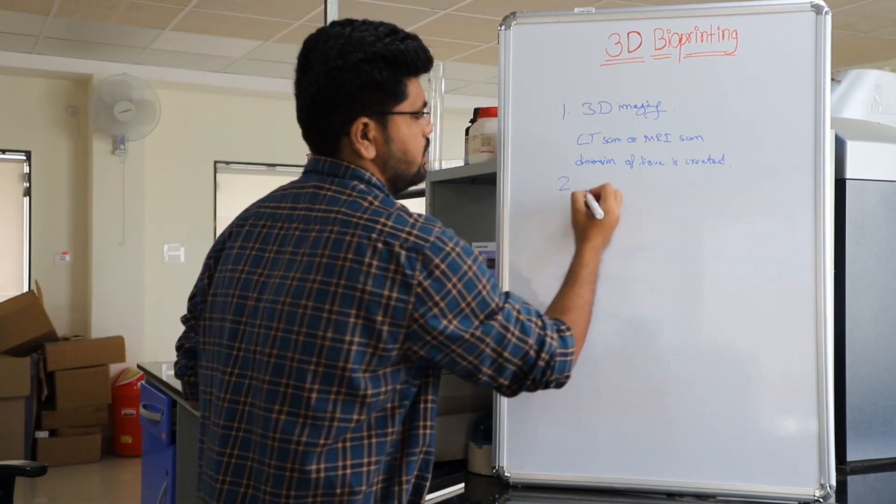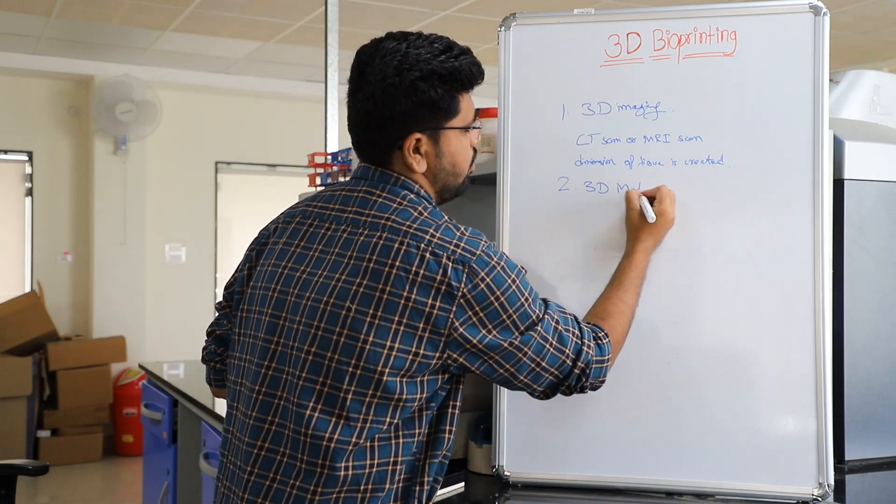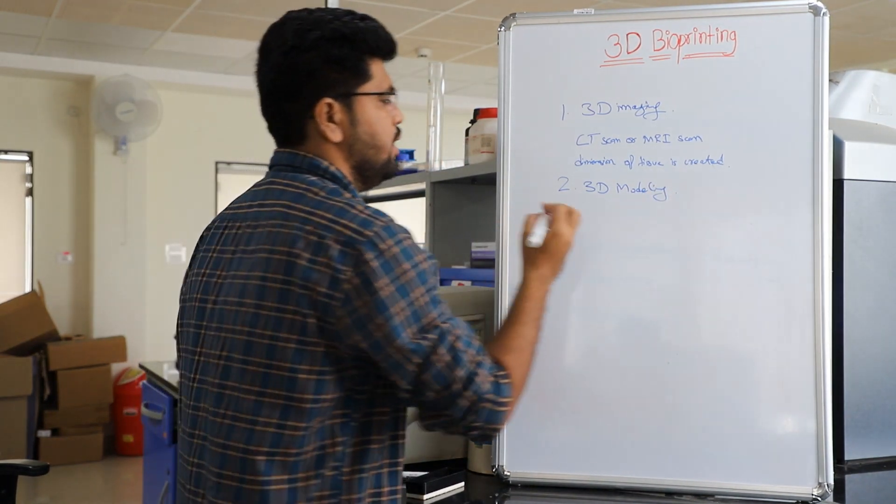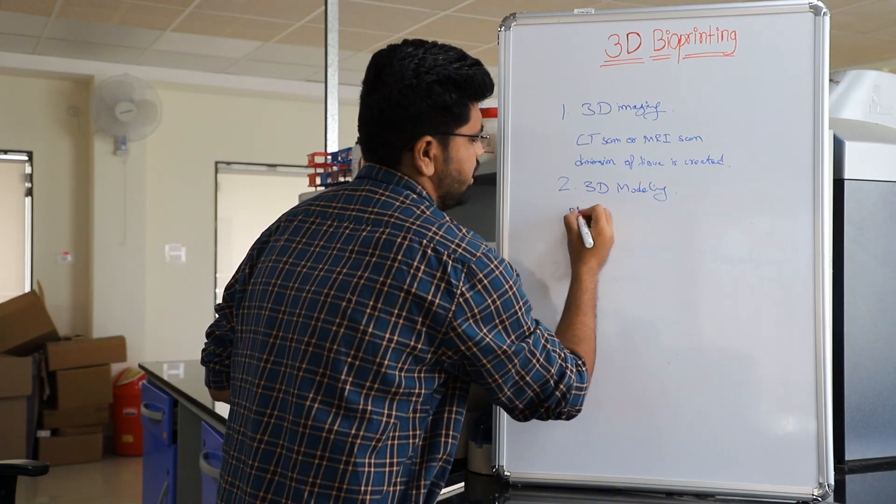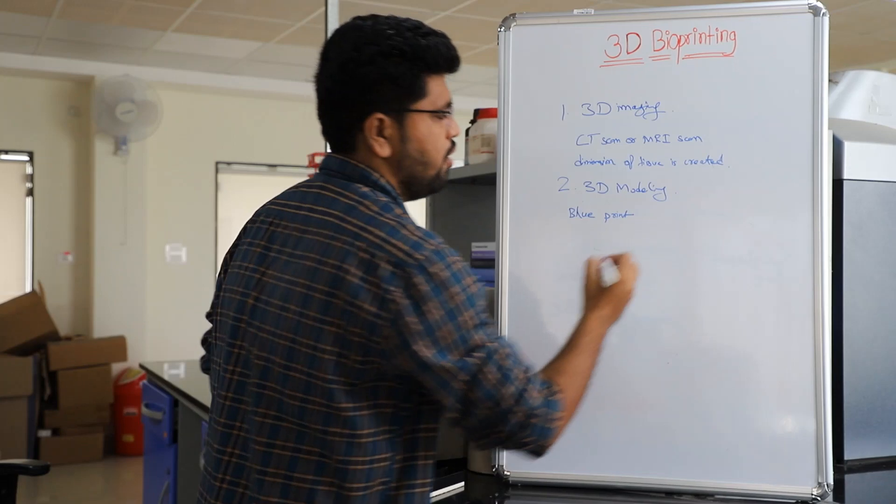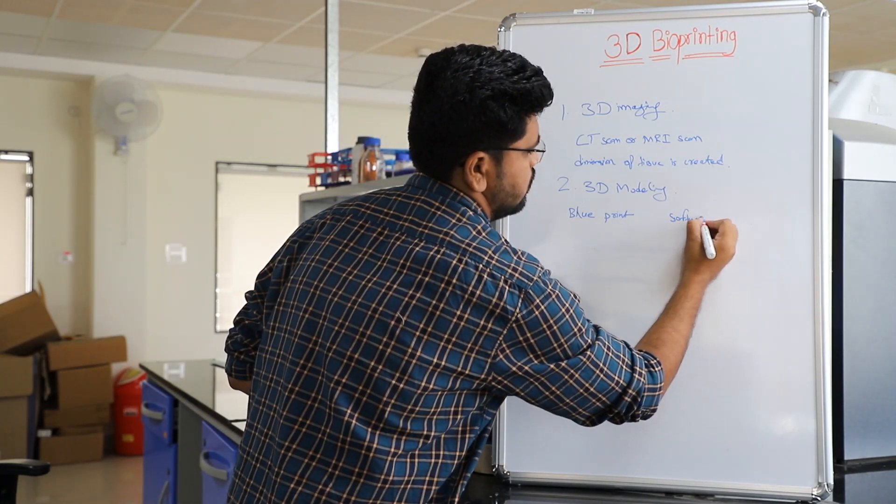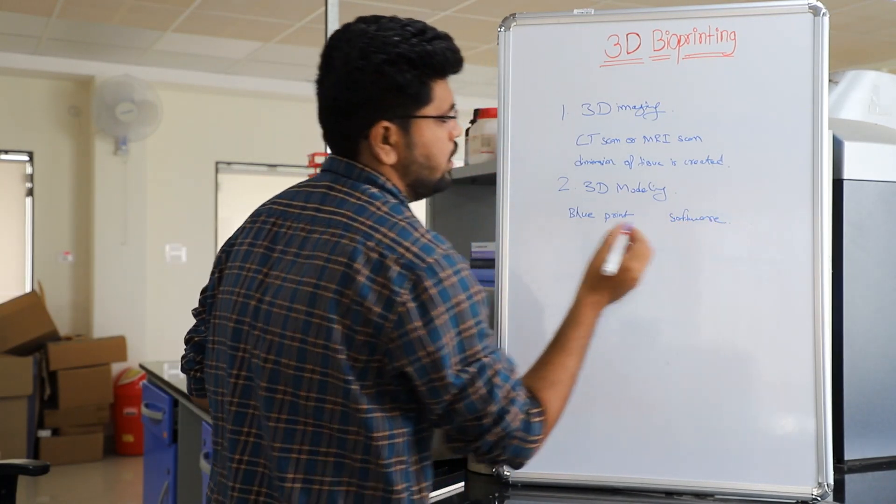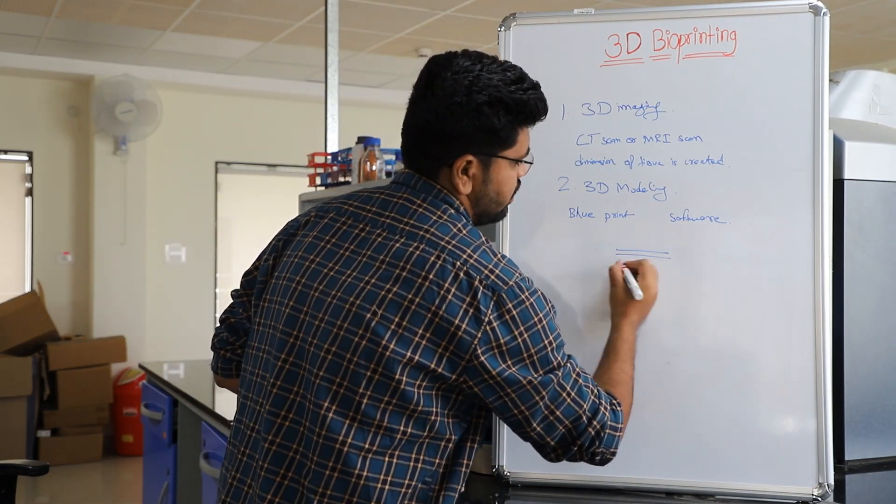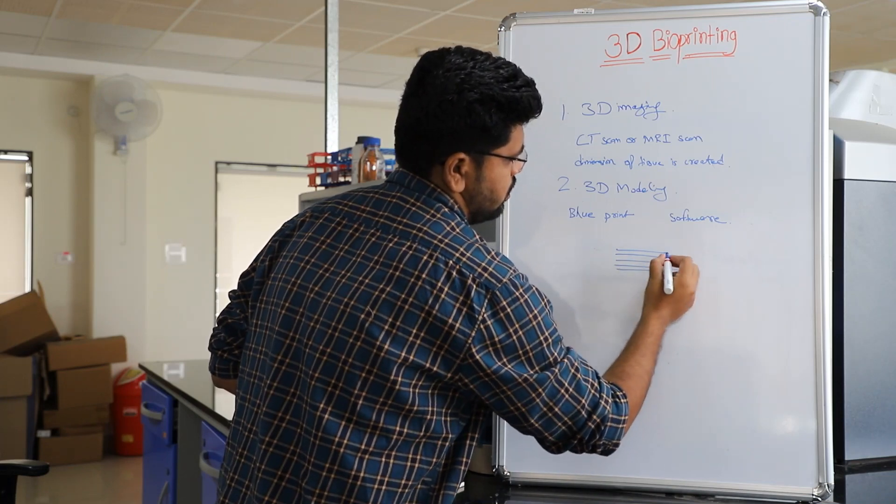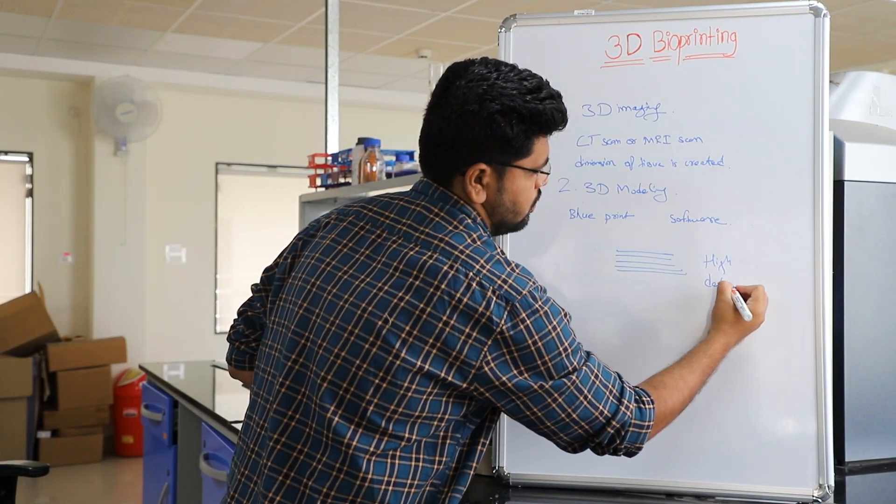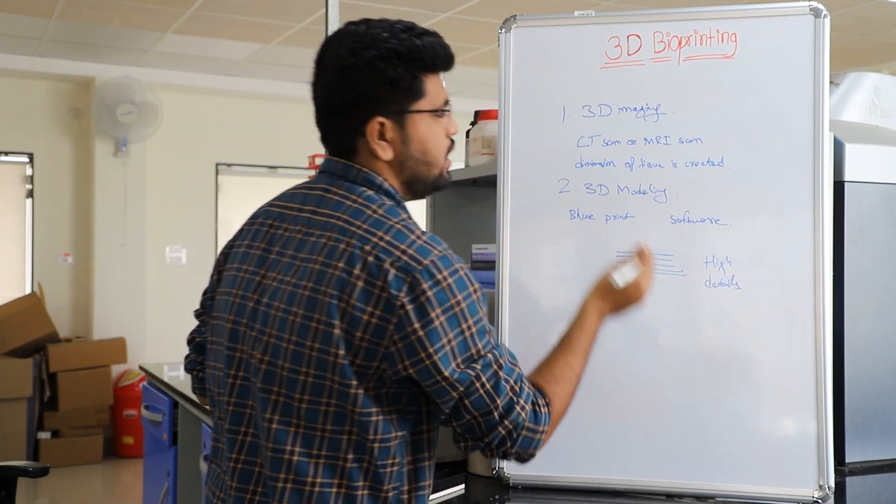In our second step which is 3D modeling, a blueprint is generated with the help of software. These blueprints include layer by layer information in high detail for our printing process.